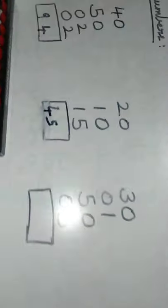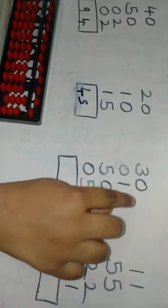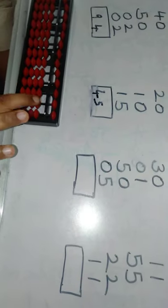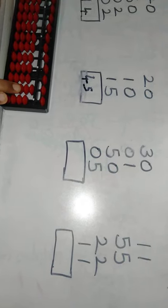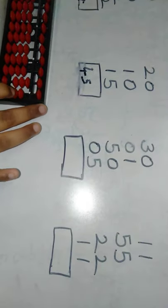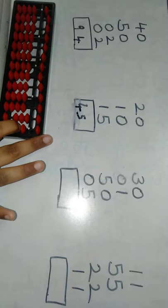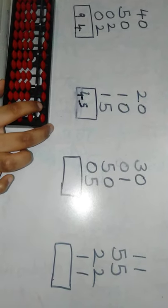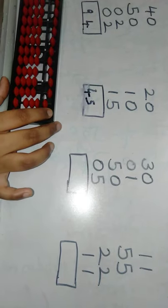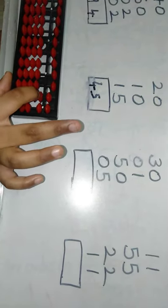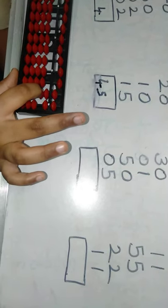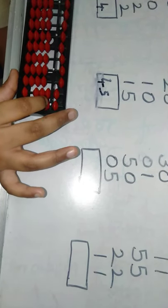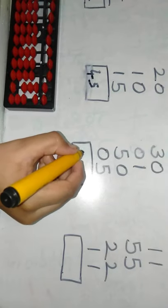Now let's go for the next problem. The first number is 30 — we have to move 3 beads from the 10's place. Then 1 — we have to move the 1's place. Then 50 — we have to move the upper bead from the 10's place. Then 5 — we have to move the upper bead from the 1's place. So 5 plus 10 is 60 (tens), plus 10 is 70, plus 10 is 80. In the 1's place: 5 plus 1 is 6. The answer is 86.